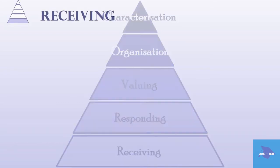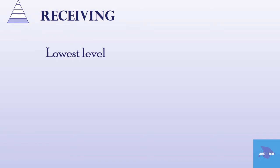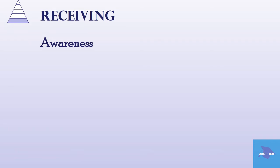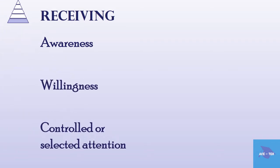The first level is receiving, the lowest level of learning outcomes in the affective domain. It means the willingness or ability to receive information and to be attentive. Receiving has three sub-levels: awareness, willingness, and controlled or selected attention.